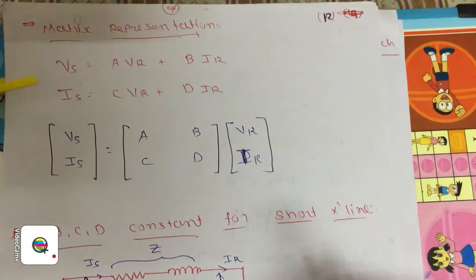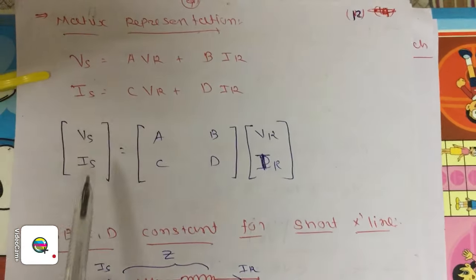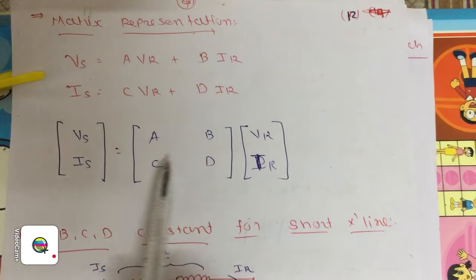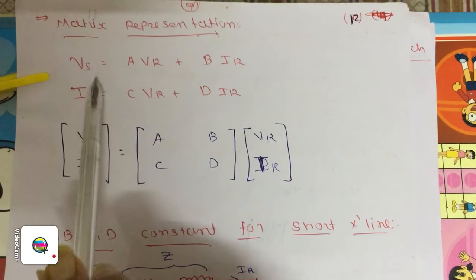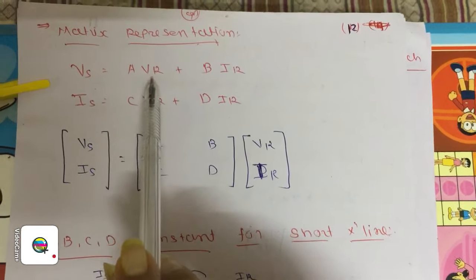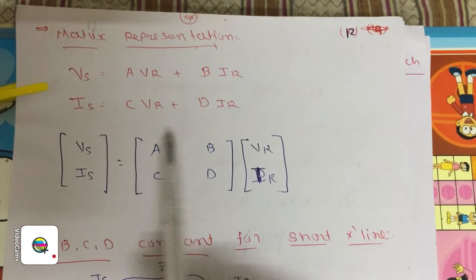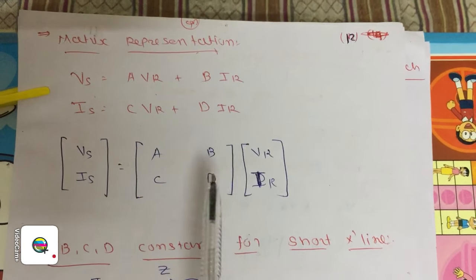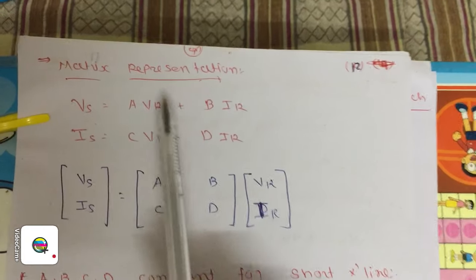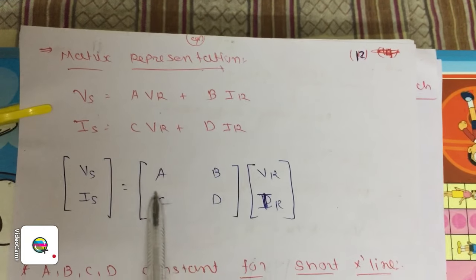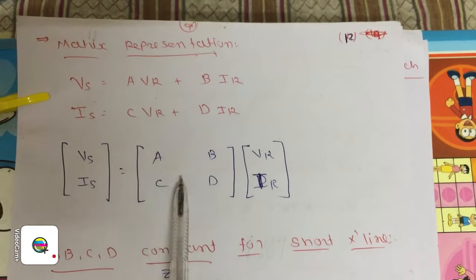We represent these two equations in matrix form. The matrix form puts VS and IS into a column vector equal to the matrix of ABCD multiplied by the column vector of VR and IR. This is a simple matrix representation of the two equations.